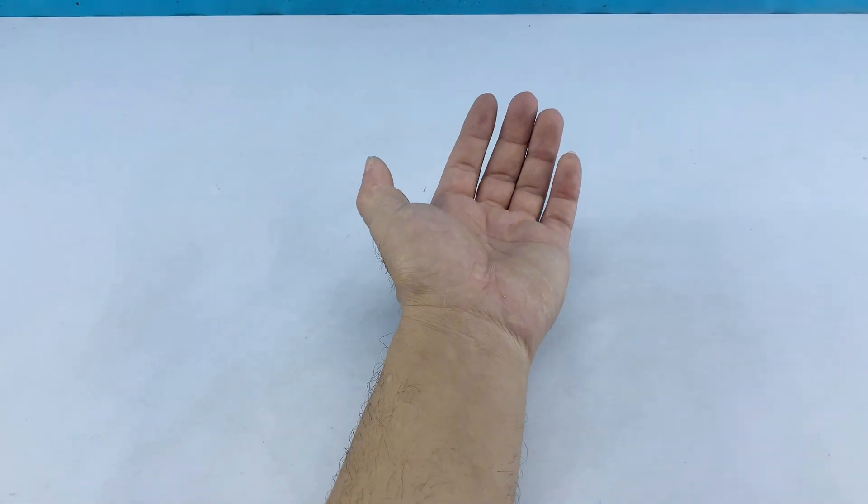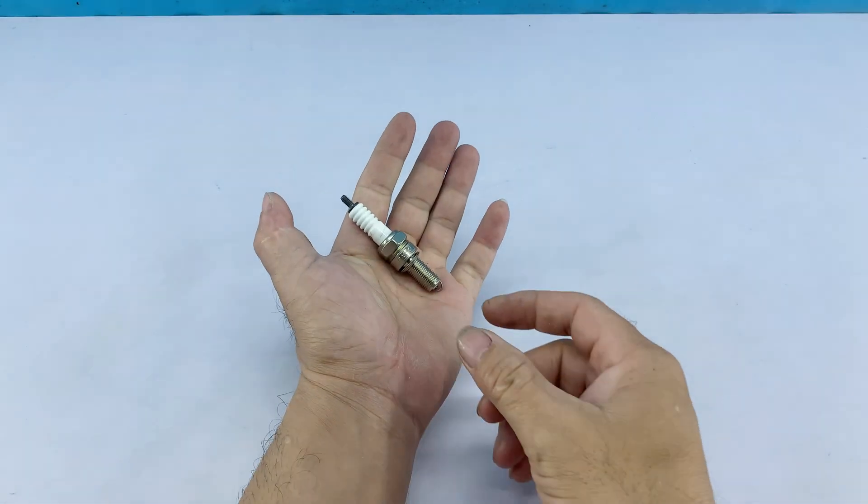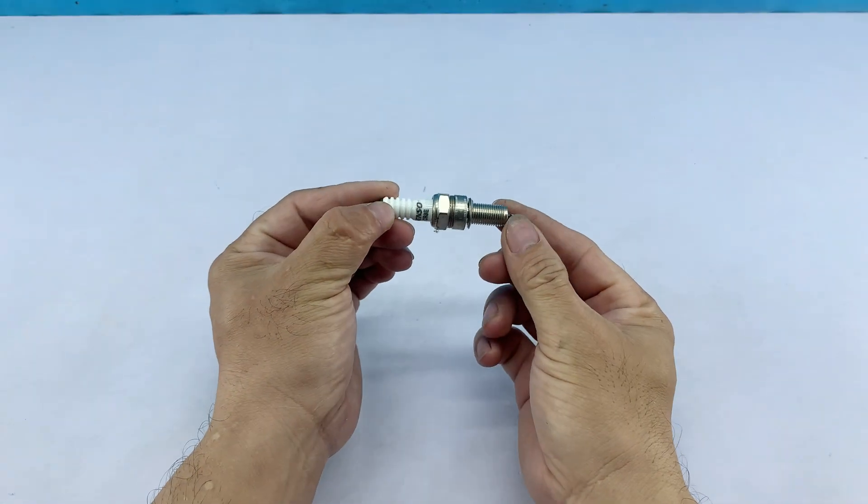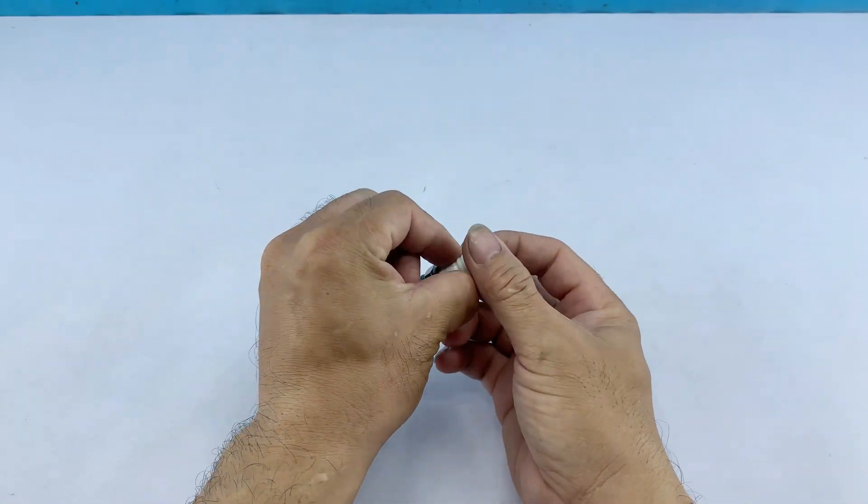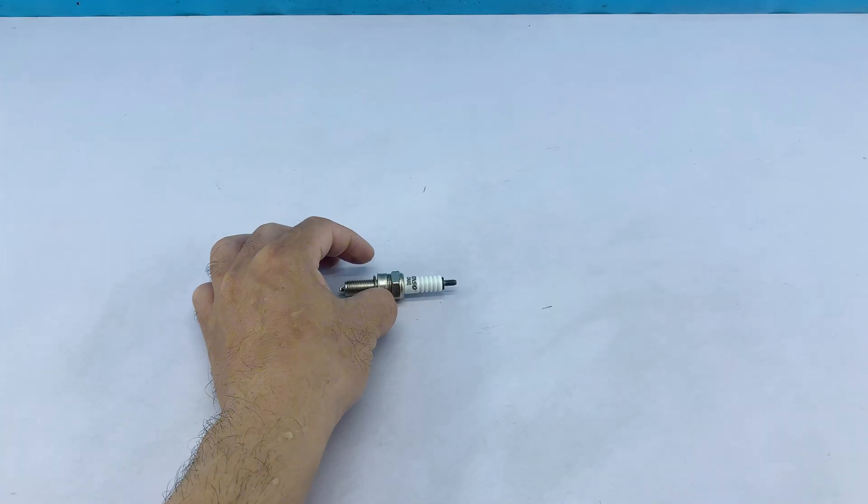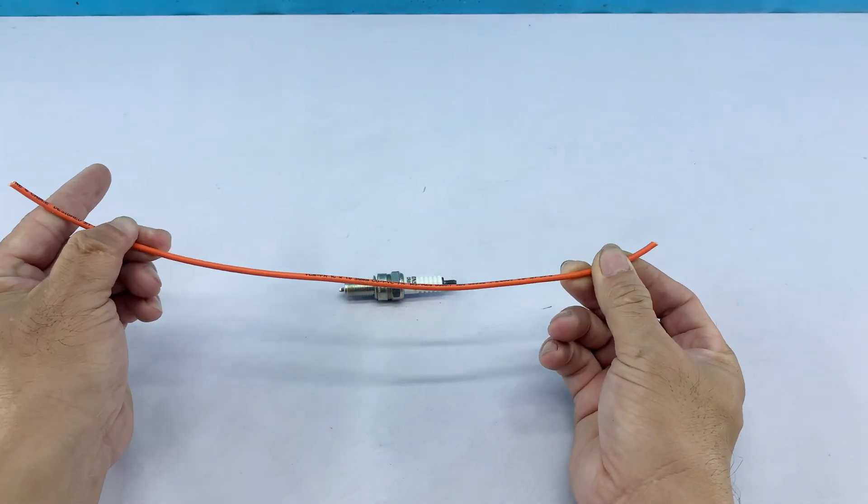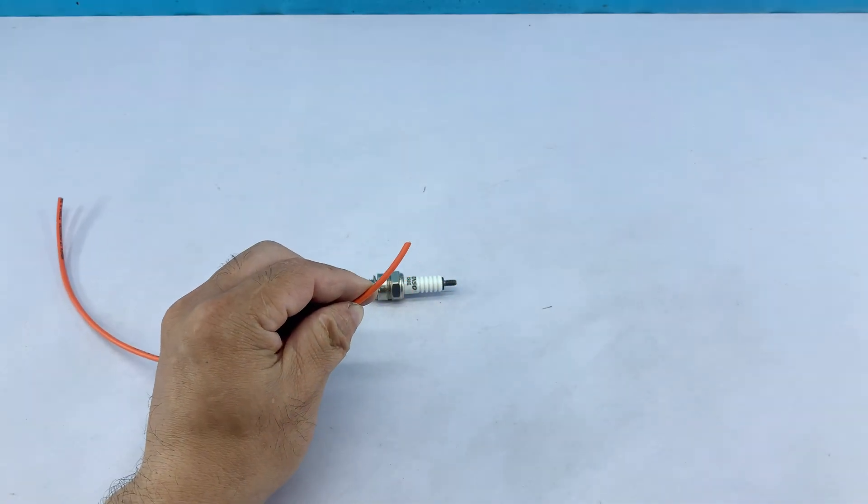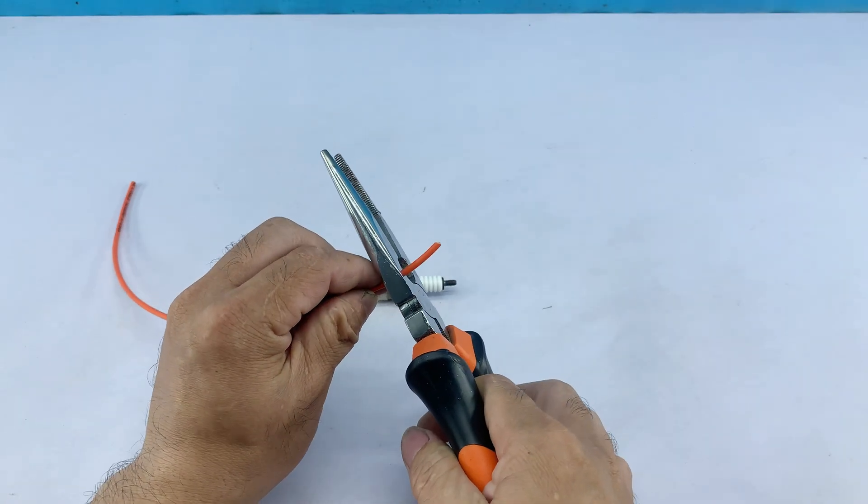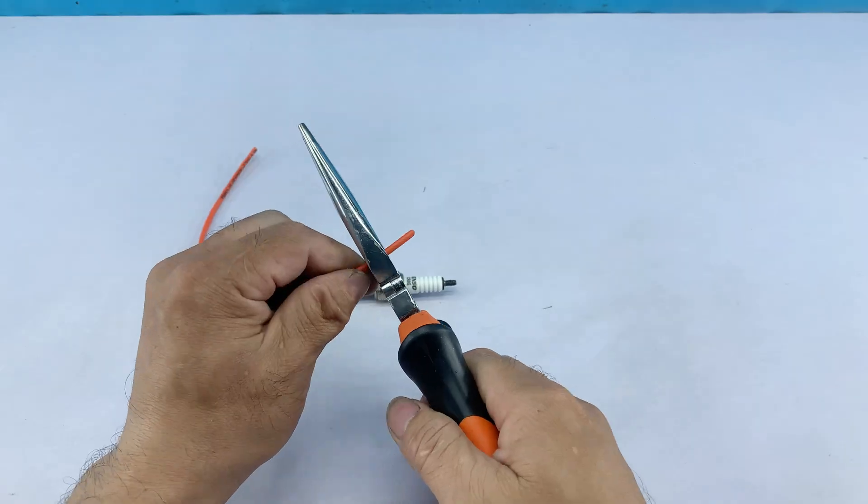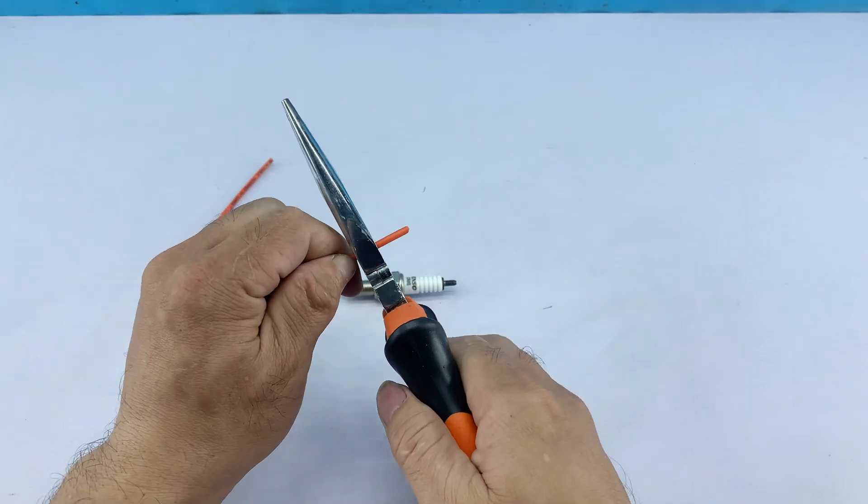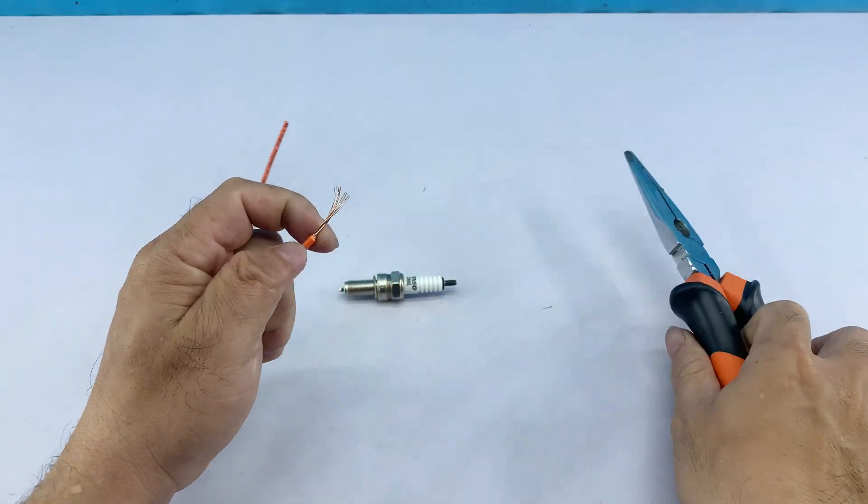Now let's look at the heart of our soldering iron – a spark plug. I'm taking an orange insulated wire and carefully stripping a small section from one end. This exposes the copper strands, which are essential for making electrical connections.